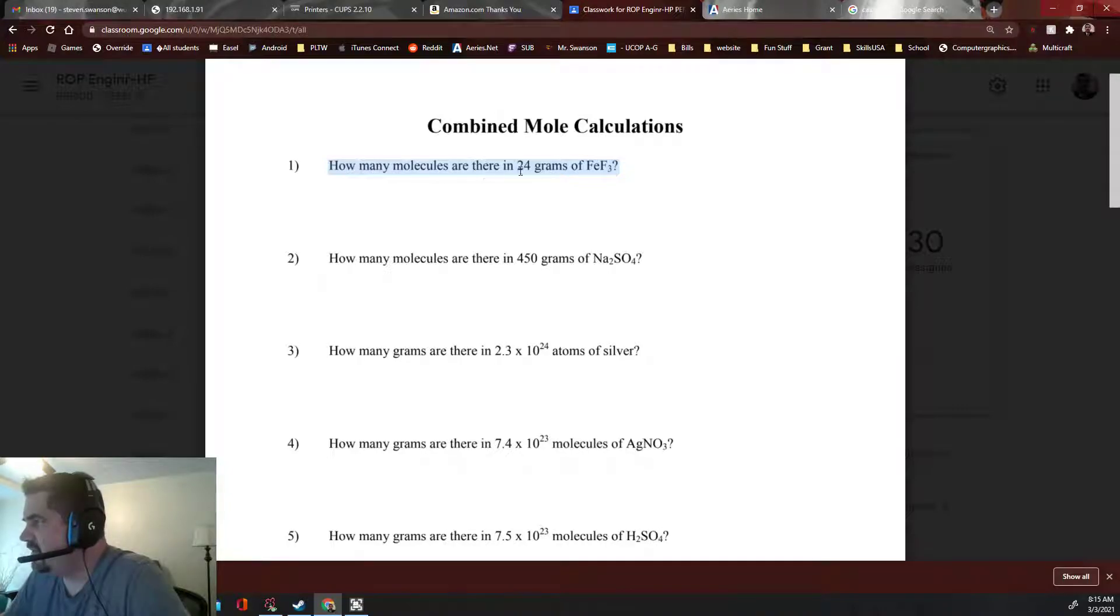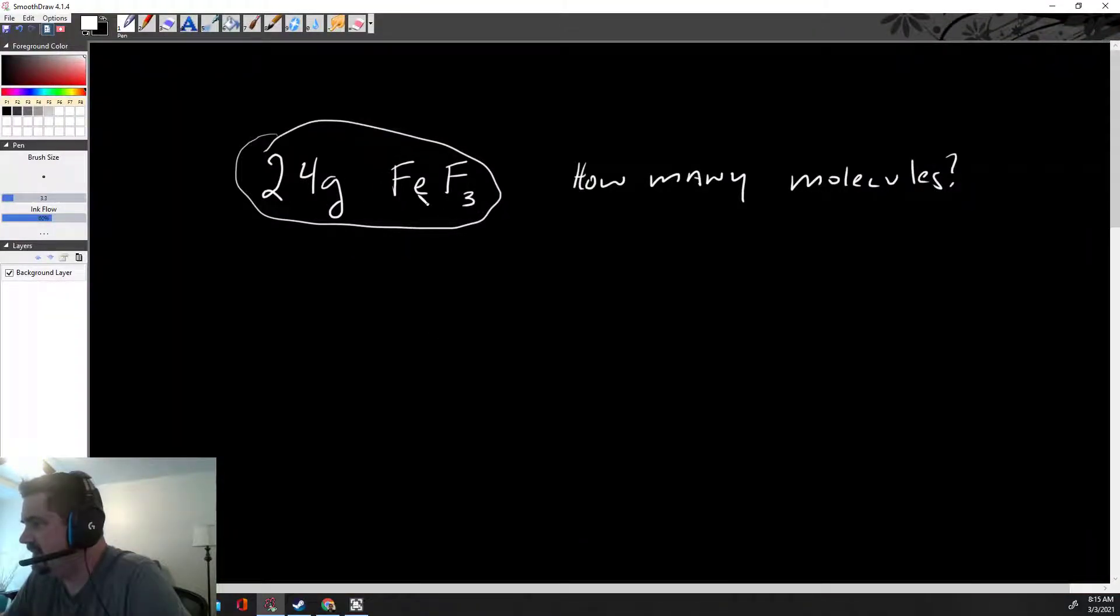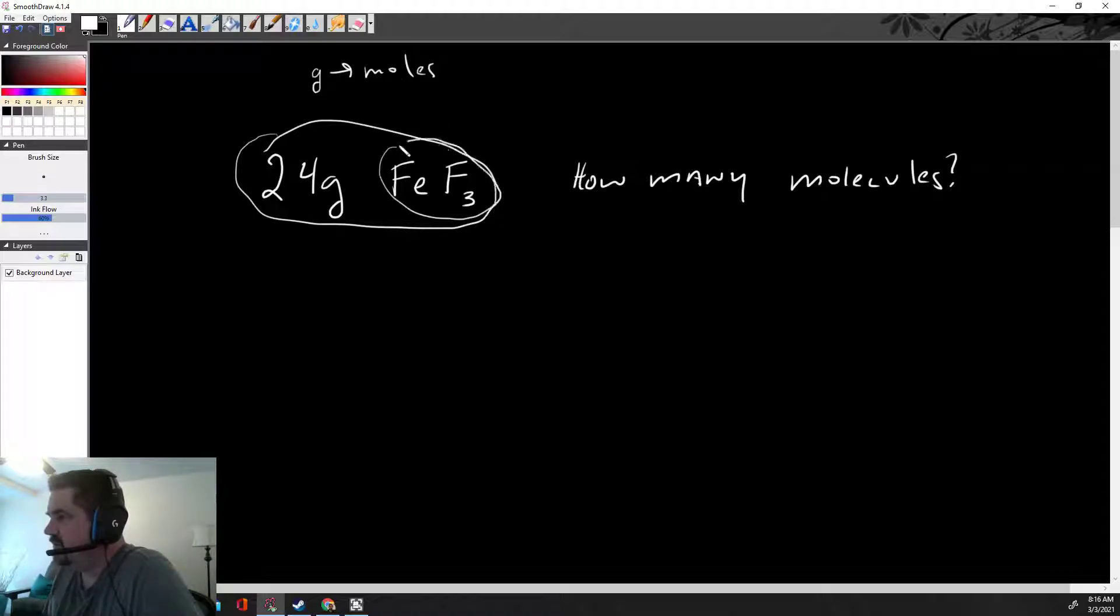We'll do number one and five because they're kind of like opposites. How many molecules are there in 24 grams of FeF3? I wrote that down here, so 24 grams of FeF3, that's iron and fluorine, so it's iron fluoride. Before we figured out how to go from grams to moles and moles to grams, we've gone back and forth. We've also done moles to particles, molecules and atoms. We end up having to do both for this assignment.